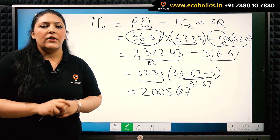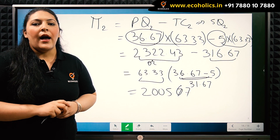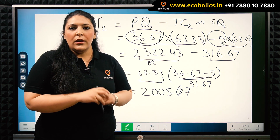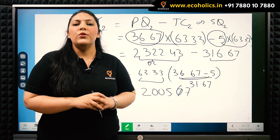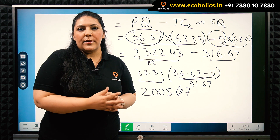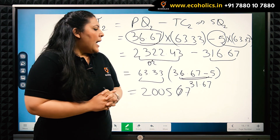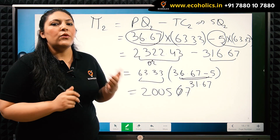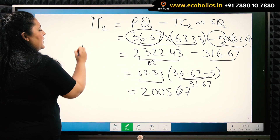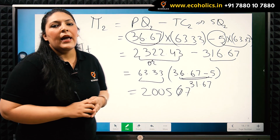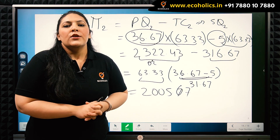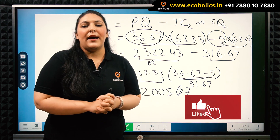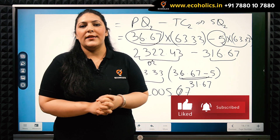We have solved a question on Cournot equilibrium — how firms find their quantity under non-collusive pricing, specifically under the Cournot assumption that each firm takes the other firm's behavior as constant while maximizing its own profit. Note that while individual profits are maximized independently, the joint profit of the industry is not maximized. That's it for now. Please like, subscribe, and share our channel Echoholics. Have a good day.